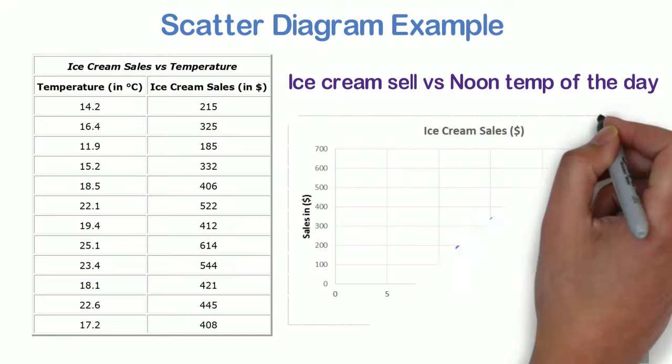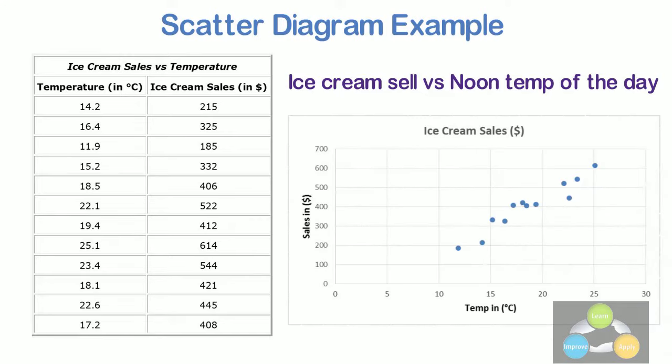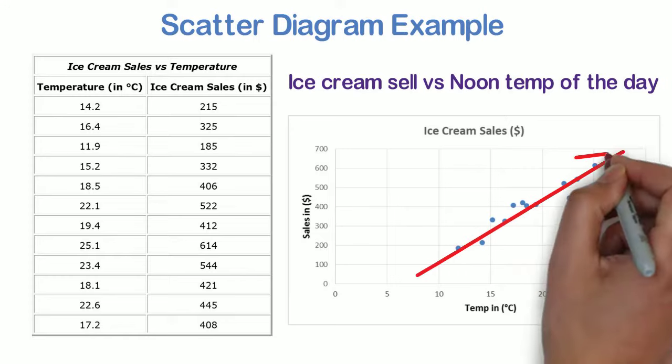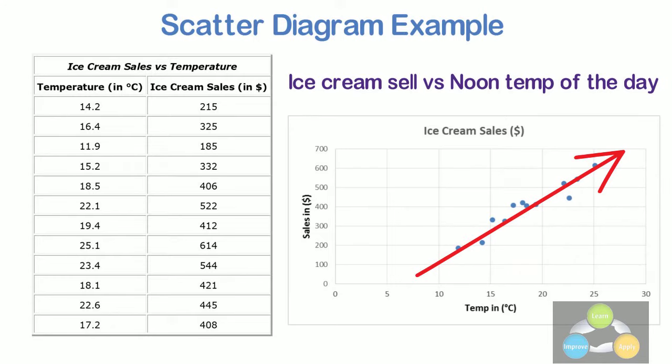And here is a scatter plot of the data. It is now easy to see that warmer weather leads to more sales, but the relationship is not perfect.